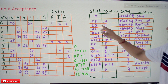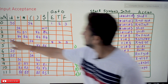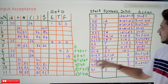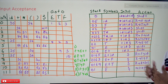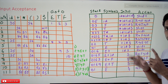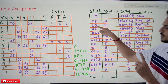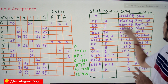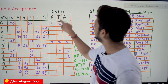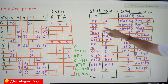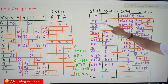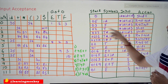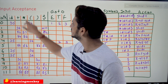Next, state 3 on ★ says reduce by production 4: T → F. Right-hand side has one symbol, so pop one element — 3 is popped. State 0 on T says push 2. Stack is now [0, 2]; F is converted to T. Remaining input is ★ id + id $. Now state 2 on ★ says shift 7, so ★ is consumed and 7 is pushed. Stack: [0, 2, 7].